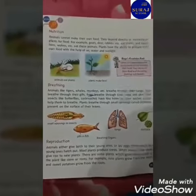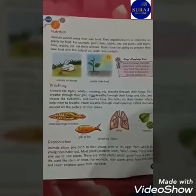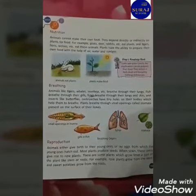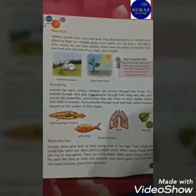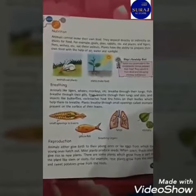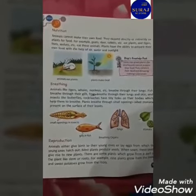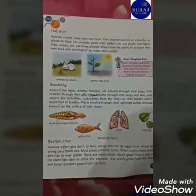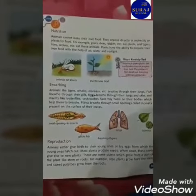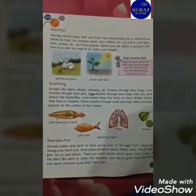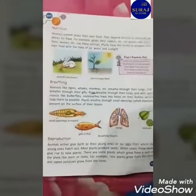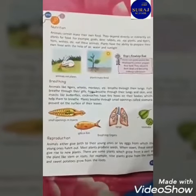My first point is nutrition. Animals cannot make their own food. They depend directly or indirectly on plants for food. For example, goat, deer, and rabbits eat plants, and tigers, lions, and wolves eat other animals. Plants have the ability to prepare their own food with the help of air, water, and sunlight.